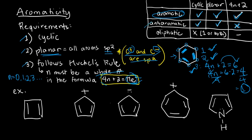If, in the first place, my compound is already not cyclic or not planar, or both not cyclic or planar, we don't even need to care about how many pi electrons it has. It is automatically called aliphatic, which is basically another word for saying non-aromatic.